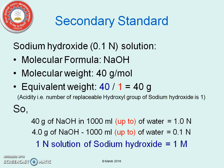For the secondary standard sodium hydroxide, preparing a 0.1 normal solution: the acidity — that is, the number of replaceable hydroxyl groups — of sodium hydroxide is 1. Therefore, molecular weight equals equivalent weight, and molarity equals normality. So 4 g of NaOH in 1000 ml gives a 0.1 normal solution, and 1 normal sodium hydroxide equals 1 molar solution.